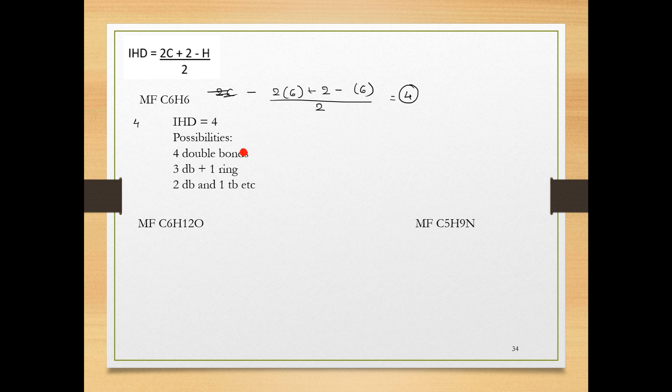One double bond also represents a ring, so there could be possibility of rings also. It could be 3 double bonds and 1 ring. I won't say 4 rings because the number of carbons are very limited. It could be 2 double bonds and 1 triple bond, because if IHD is 2, it is considered as 1 triple bond. There are many possibilities. What it is will be concluded when you have other spectroscopic data like IR and NMR.